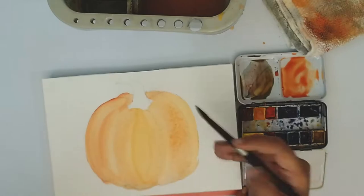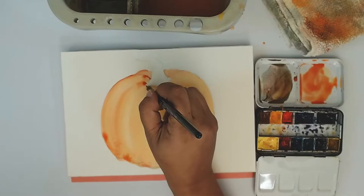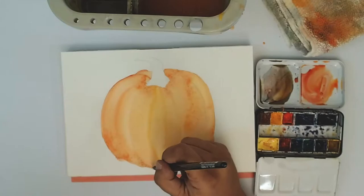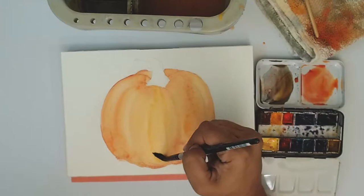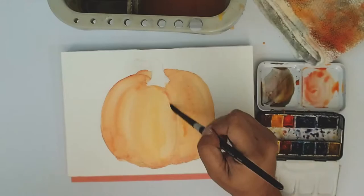But on the hot press paper, of course the granulation didn't show up very much, but at the same time the paint itself didn't seem to move very much. And the other interesting thing was that it also moved more as it was drying, so it doesn't move a lot when you first put it down.